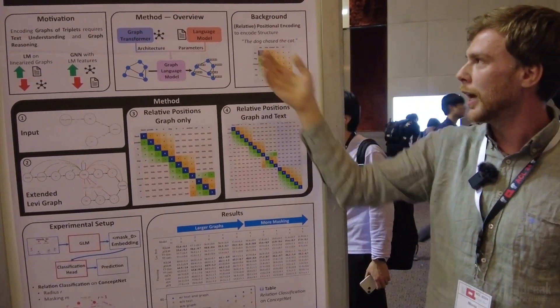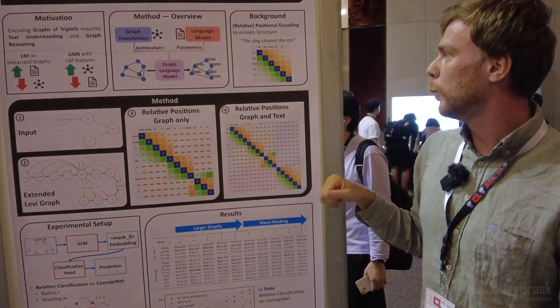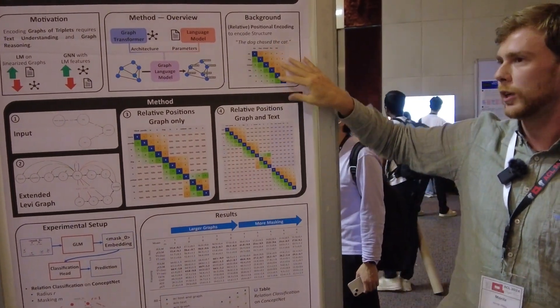So to convert the language model to a graph transformer, we now need to convert this sequence structure here to a graph structure.